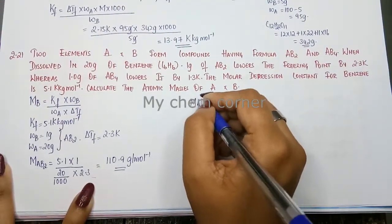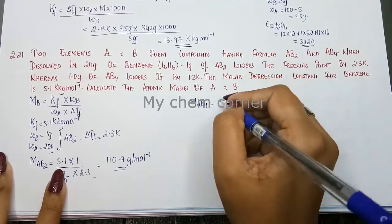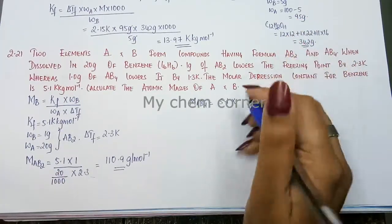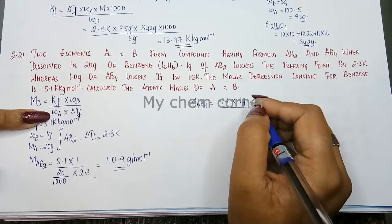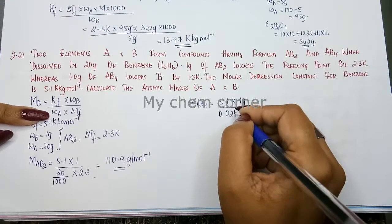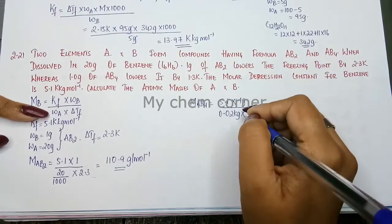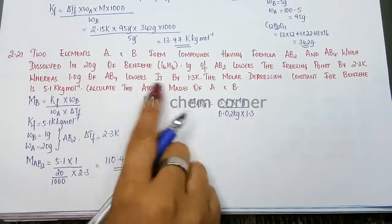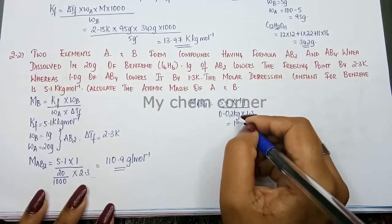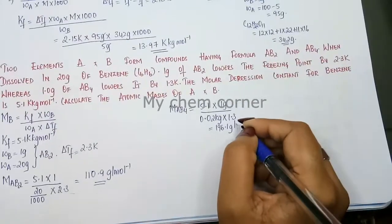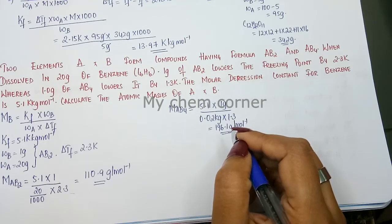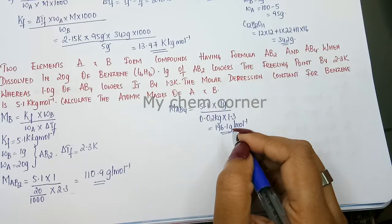Same thing when we do for molar mass of AB4 the values are going to change. Kf will remain the same 5.1 into the weight of the second compound here is going to be 1 gram divided by Wa is going to be same as 20 divided by 1000 is going to be 0.02 kg into this is going to be 1.3 Kelvin because that is the second temperature. Now once you finish that one this is going to be our answer is 196.1 gram per mole.